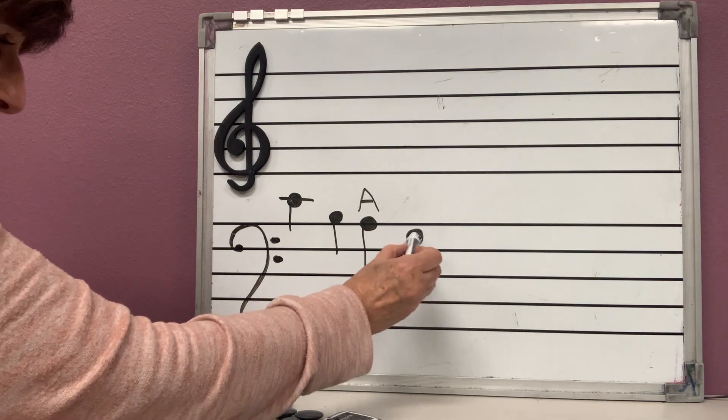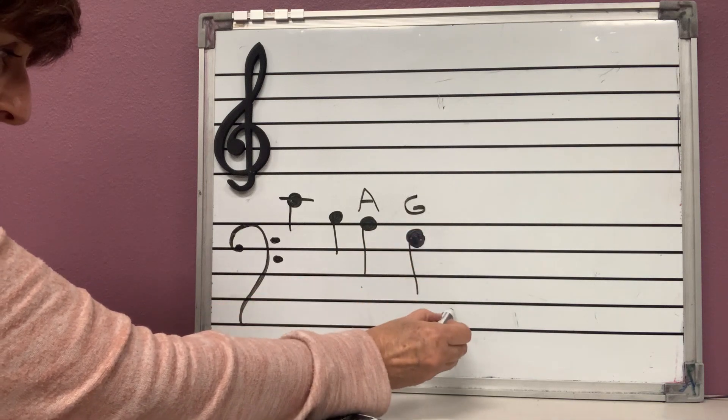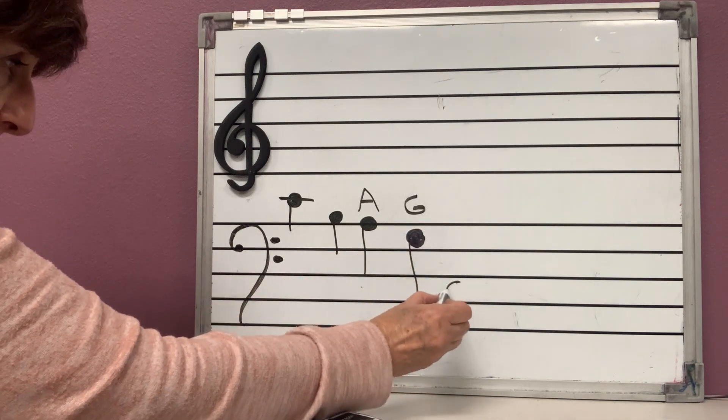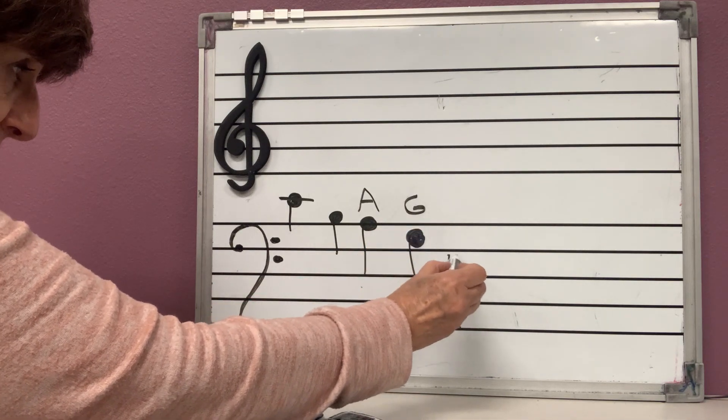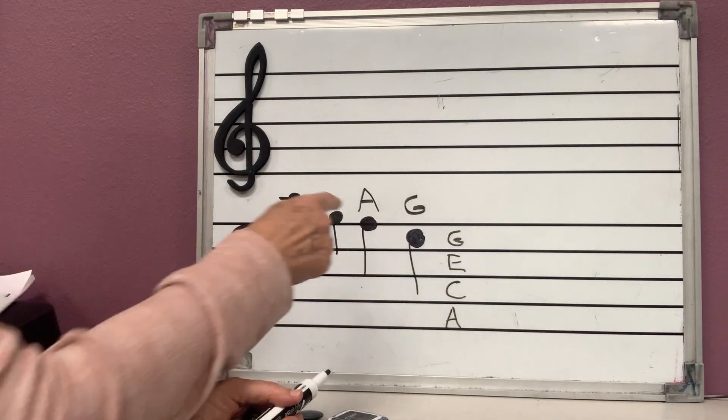And the last space is G. What do we say on the spaces? All cows eat grass, right? So we already know this is a G,